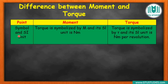Fourth difference: symbols and units. Moment is represented by symbol M, and its unit is Newton-meter. Torque is represented by symbol T (sometimes shown as tau), and its unit is also Newton-meter. Both share the same unit, which is a common source of confusion.